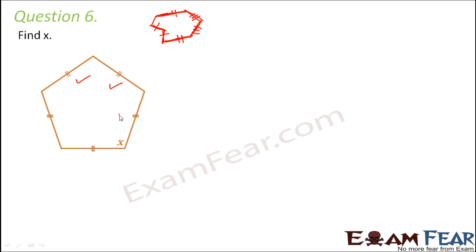Now how many sides are there? One, two, three, four, five. So there are five sides and all five sides are equal. Since all the five sides are equal, this is a regular polygon or a regular pentagon. Therefore all the angles will also be equal, so if one angle is x that means all the other angles are also x.